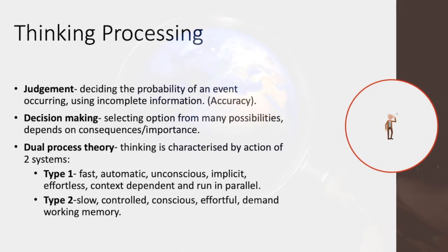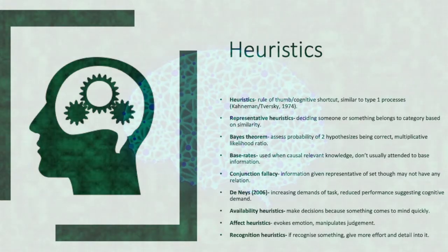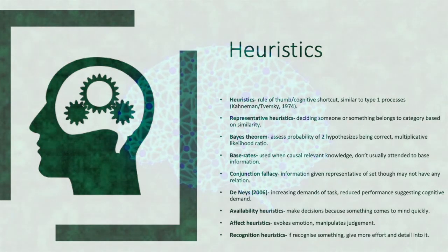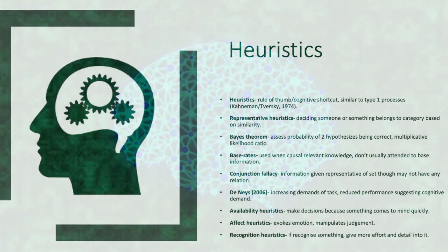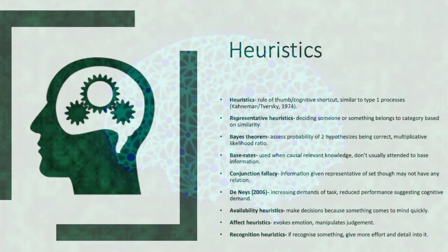Heuristics are rule of thumb cognitive shortcuts similar to Type 1 processes, according to Kahneman and Tversky in 1974.